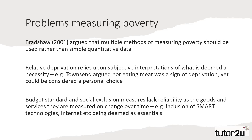The more subjective interpretations have also been criticised. Townsend's initial study counted not eating meat as a sign of deprivation, yet in contemporary society it is a personal choice rather than a socially desirable trait. Finally, Budget Standard measures and Social Exclusion measures can be seen to be subject to rapid changes. Whilst once considered a luxury, smart technology is essential in today's society, as is internet access due to the changes in accessing benefits and healthcare.